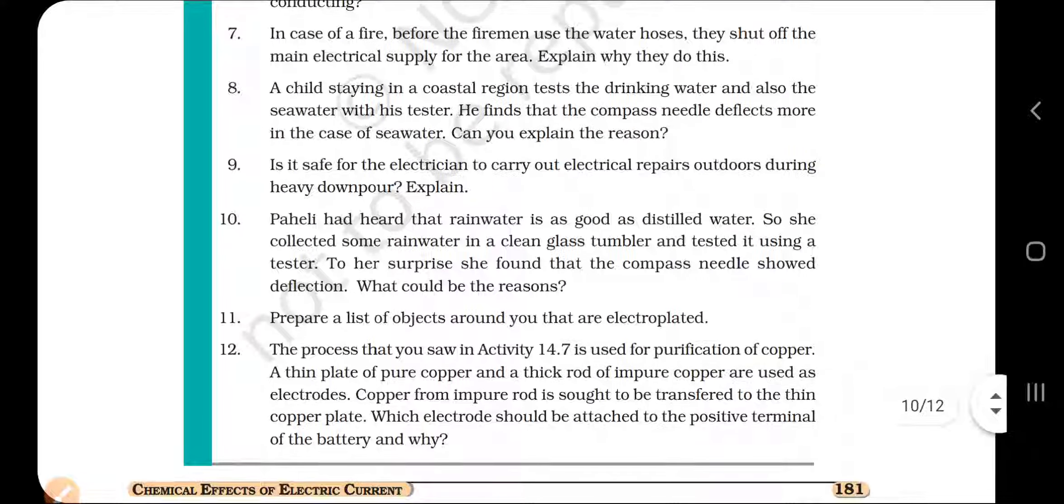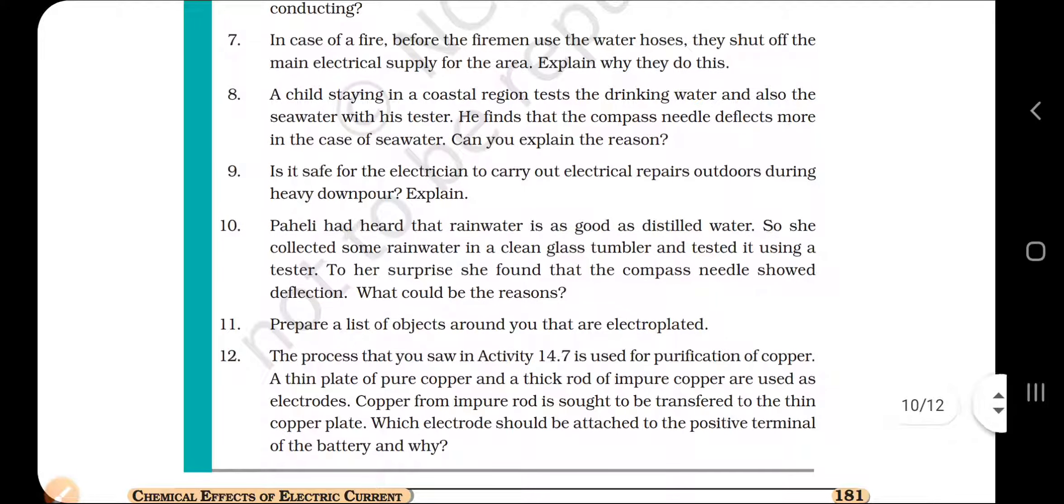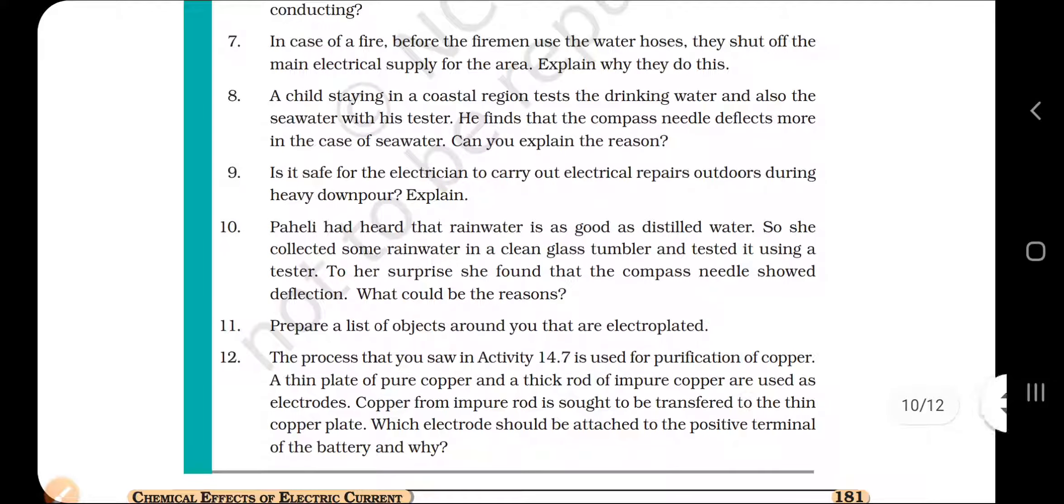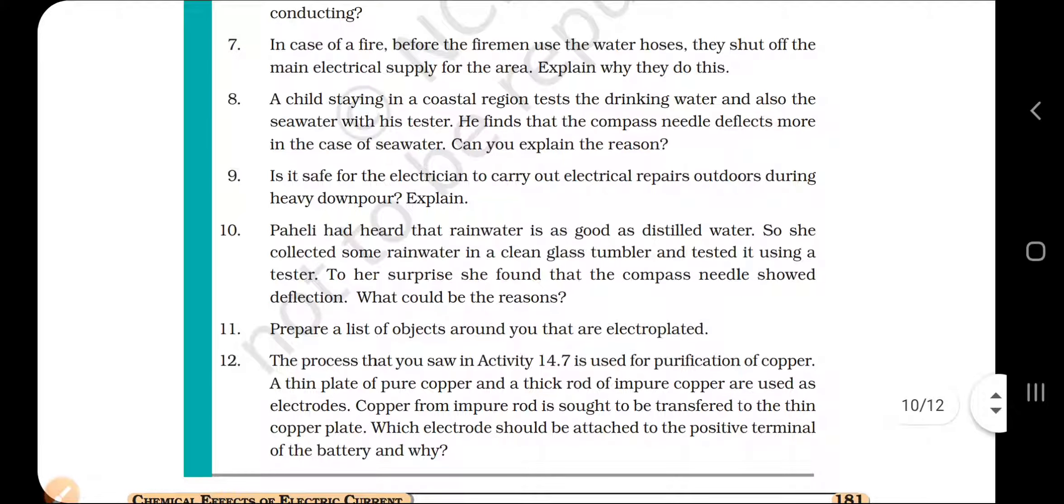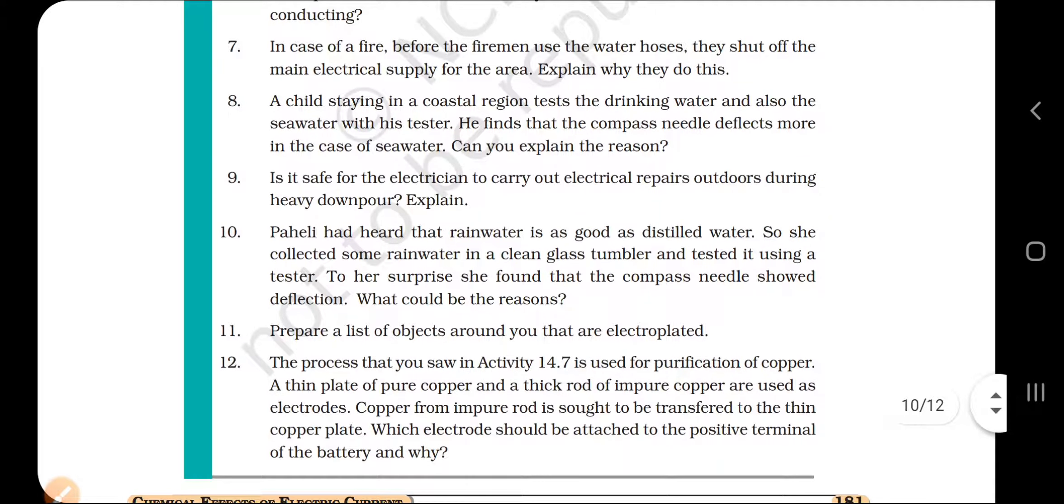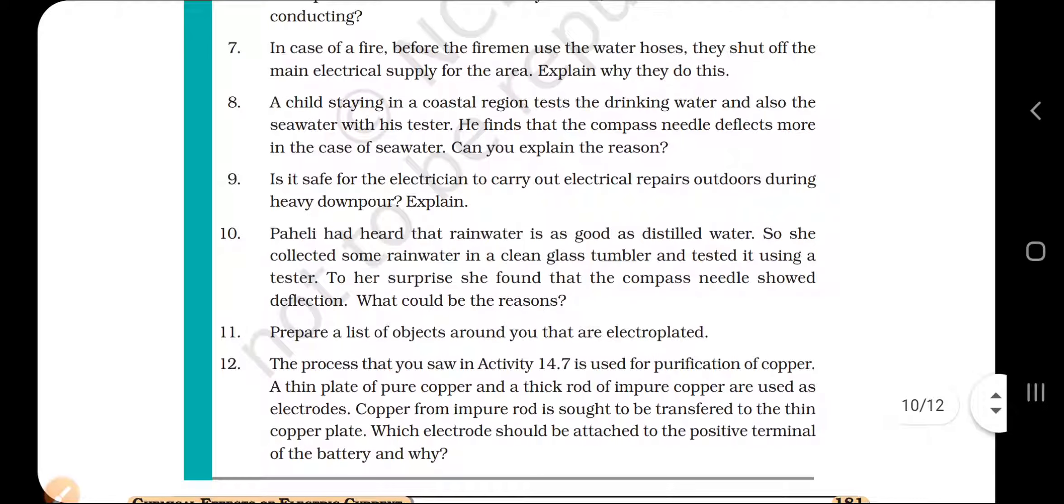Next question, number 10. Paheli had heard that rainwater is good as distilled water. So she has collected some rainwater in a clean glass tumbler and tested it by using a tester. To her surprise, she found that the compass needle shows deflection. So what could be the reason? Rainwater is pure water but when rainwater falls down to the earth through the atmosphere, it mixes with different acidic gases. You have heard about acid rain.